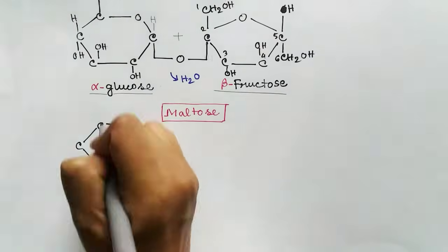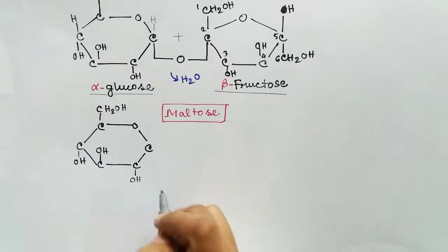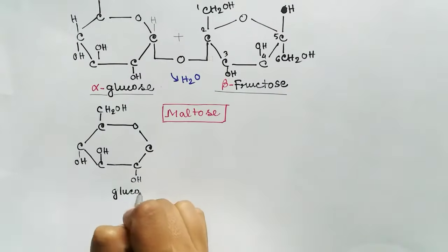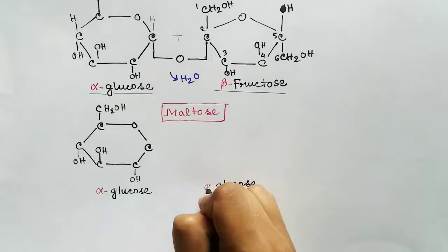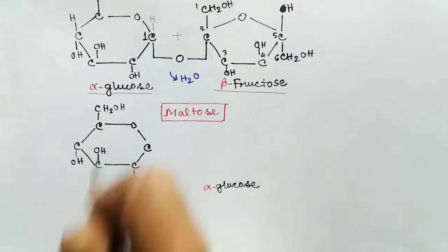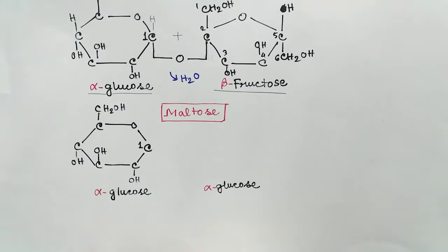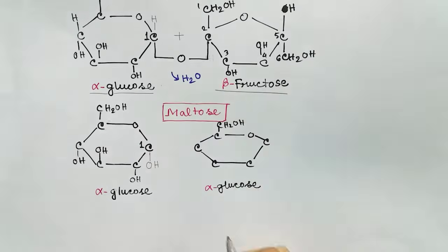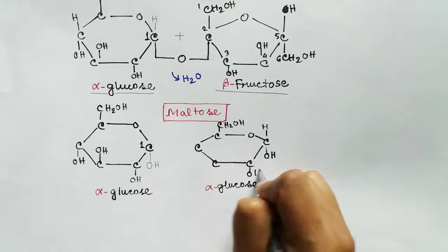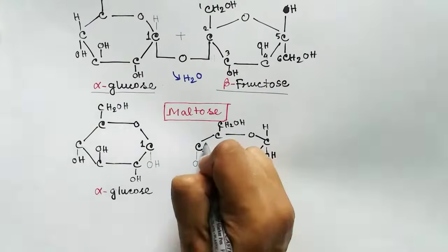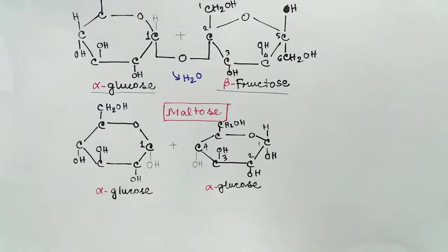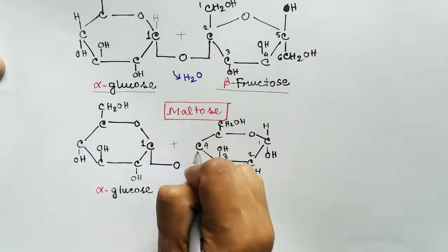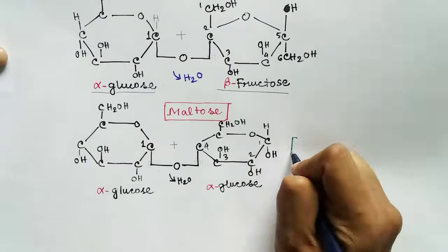In the case of maltose, it is also a disaccharide. Maltose is made up of two monosaccharides, but in this case both monosaccharides are alpha glucose. So maltose is a disaccharide of alpha glucose — two alpha glucose molecules linked together by a glycosidic bond form one maltose. The glycosidic bond is between the first carbon of one glucose and the fourth carbon of the other glucose.